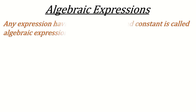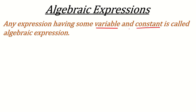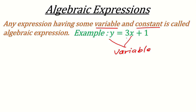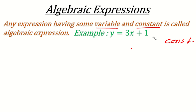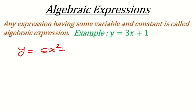So what is an Algebraic Expression? An Algebraic Expression is any expression having some variable and constant. For example, y = 3x + 1. Here x and y are letters, so they are called variables. The fixed numbers 3 and 1 are called constants. The operations used here are plus and multiplication. Any expression involving variables and constants is called an Algebraic Expression — for example, y = 6x² + 4x + 1.